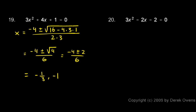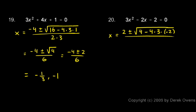And number 20: a is equal to 3, b is equal to negative 2, and c is equal to negative 2. So x will be negative b, which is a positive 2, plus or minus the square root of b squared — b is negative 2, so b squared is 4 — minus 4 times a times c. And all that is over 2a, which is 2 times 3.